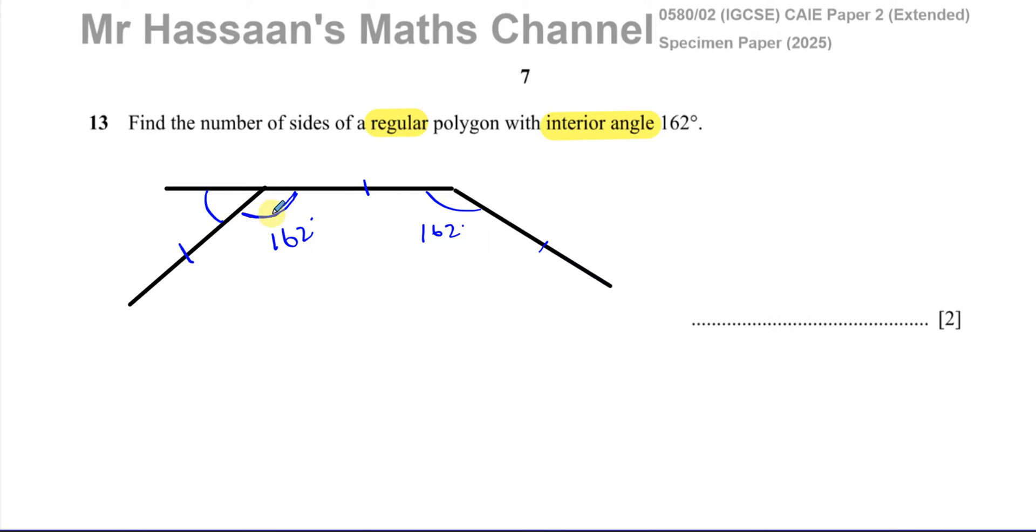There are two different formulas I could use for this question. One of them will make life difficult and the other will make life easy. Because if you consider all the exterior angles in a regular polygon, they always add up to the same number in any polygon, which is 360 degrees.